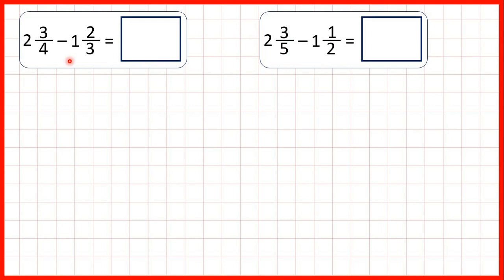Now, we need to subtract mixed numbers. We have 2 and 3 quarters minus 1 and 2 thirds. But to subtract fractions, we need the denominators to be the same, so we need to find a common multiple of 4 and 3.